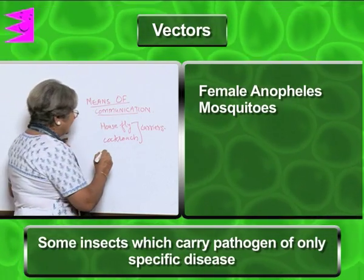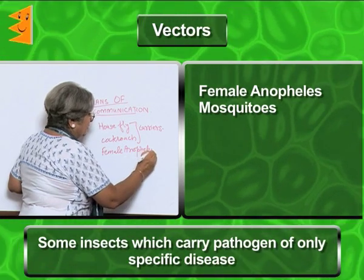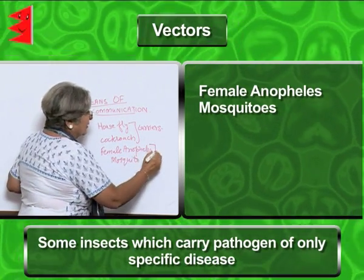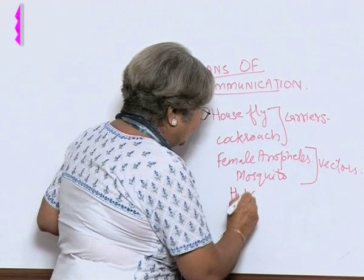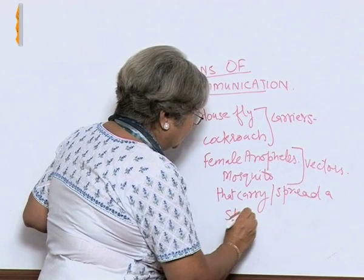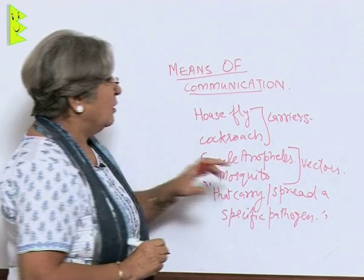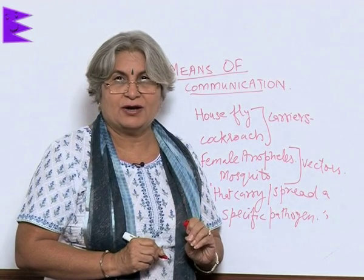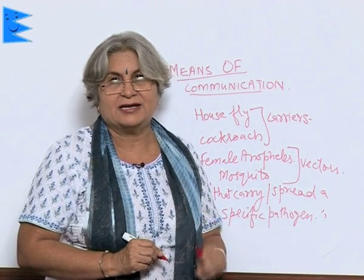There are some insects which carry the pathogen of only a specific disease — these are called vectors. For example, the female Anopheles mosquito; even the male cannot cause this disease. Vectors are those organisms that carry or spread a specific pathogen. The female Anopheles mosquito has the malarial parasite, that is the plasmodium, in its body. When it bites us, along with saliva it also leaves the plasmodia in our body, which enter our blood and finally reach the liver cells.